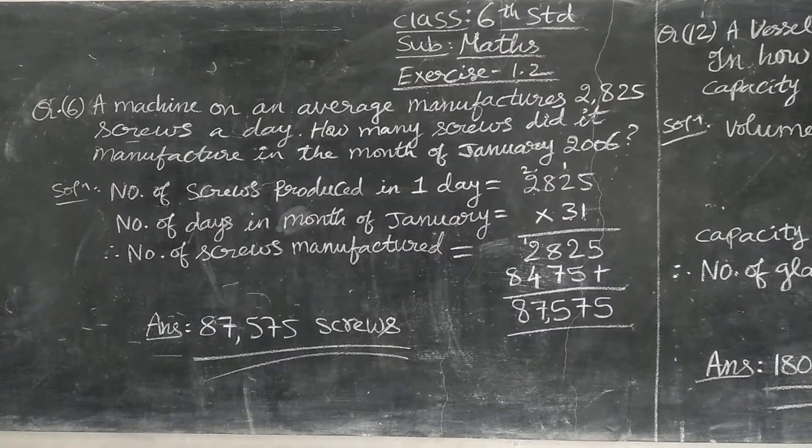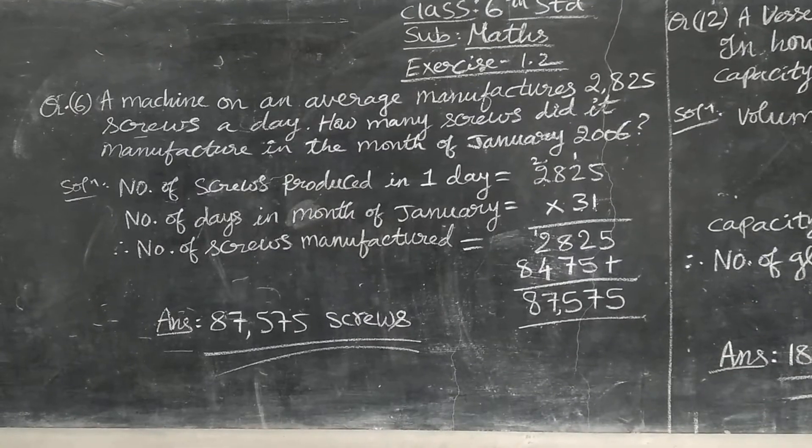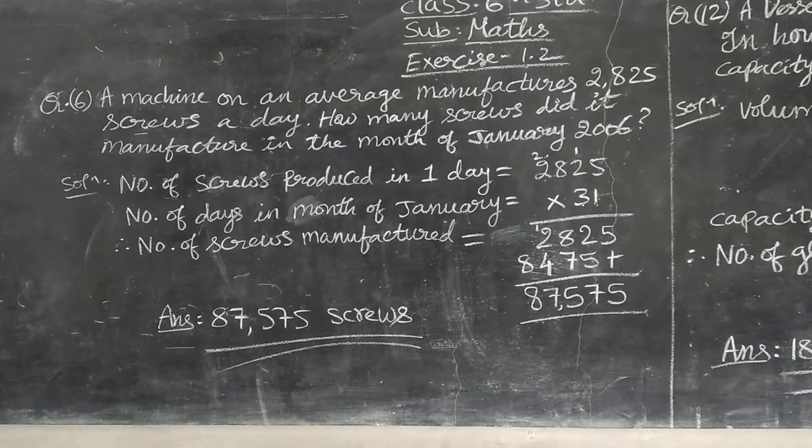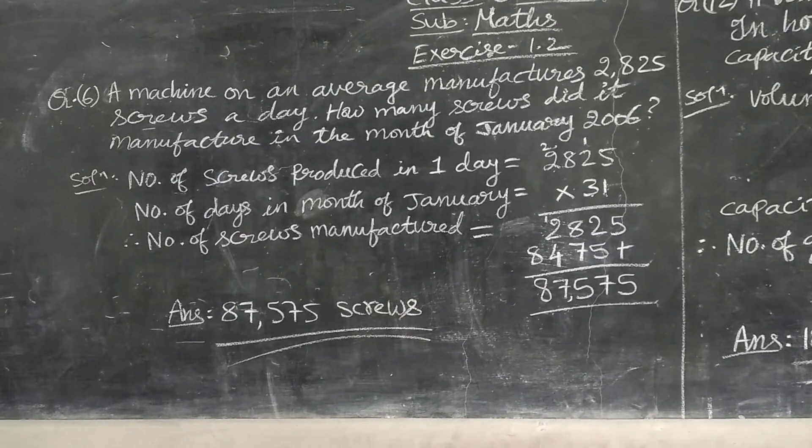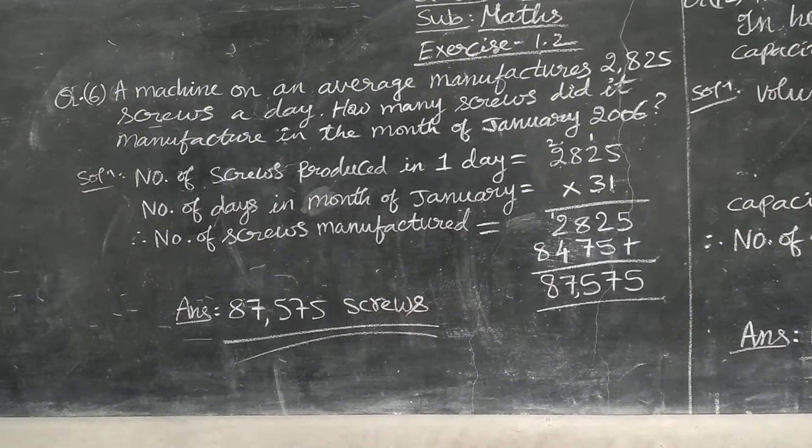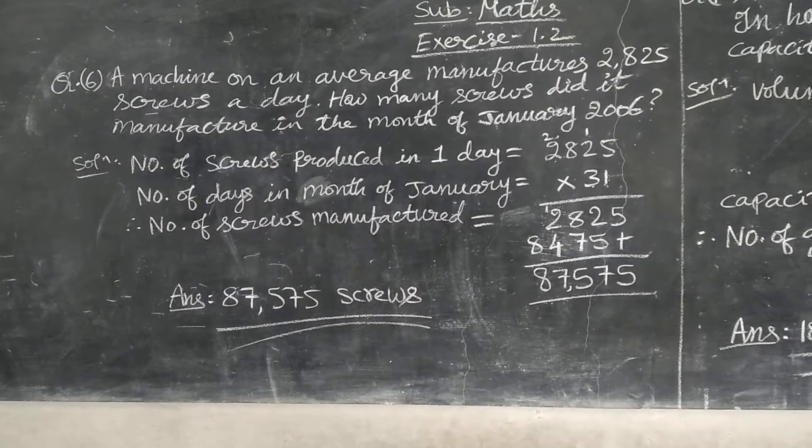A machine on an average manufactures 2825 screws a day. So it means in one day 2825 screws are manufactured. That first sentence you have to write in solution. What I have written? Number of screws produced in one day.